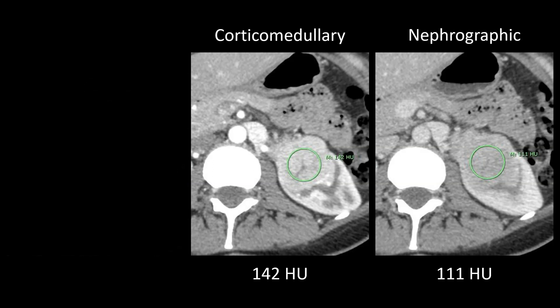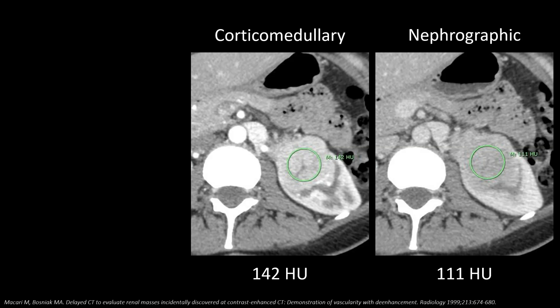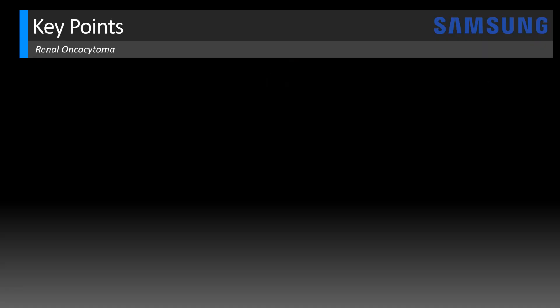What if we only had an enhanced phase and a delayed phase without non-contrast imaging? Doctors Macari and Bosnia did a study showing that if a mass is hyperdense on enhanced images and then drops in density — or de-enhances — by 15 Hounsfield units or more, assuming no vascular abnormality, that indicates a solid mass. A hyperattenuating cyst would tend to stay the same density over time. The rapid drop here of much more than 15 Hounsfield units confirms this is a neoplasm. That concept can help when dealing with a limited CT scan.